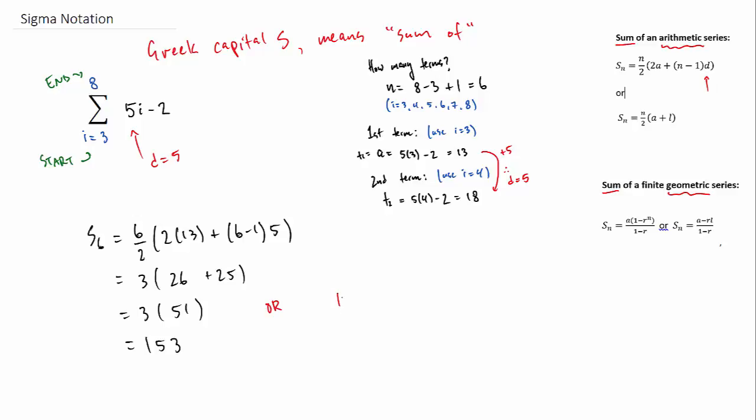n is 6, a is 13, and d is 5, and it will give us a value of 153.